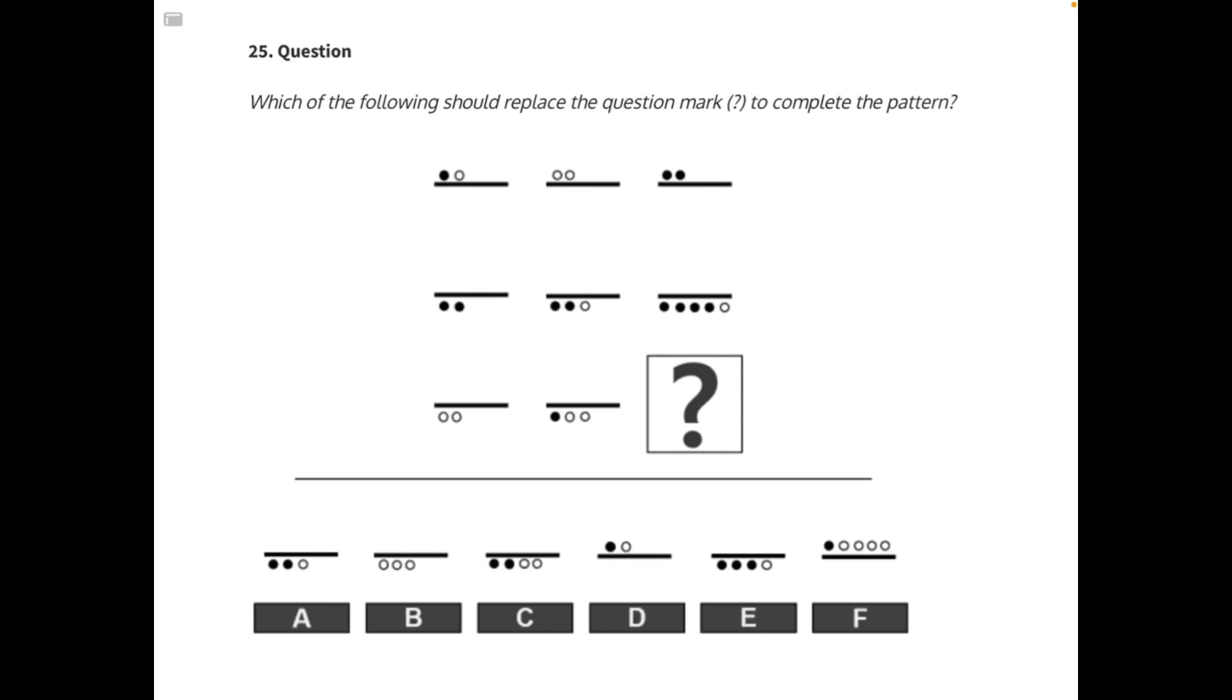This is an arithmetic matrix where each of the circles represents a numerical value. Black circles represent the number 3, and white circles represent the number 1. The placement of the circles also affects the numerical value. Anything above the line is positive, and anything below the line is negative.